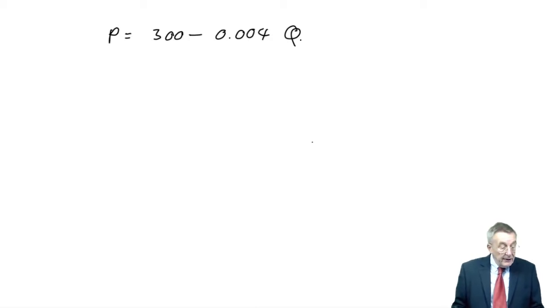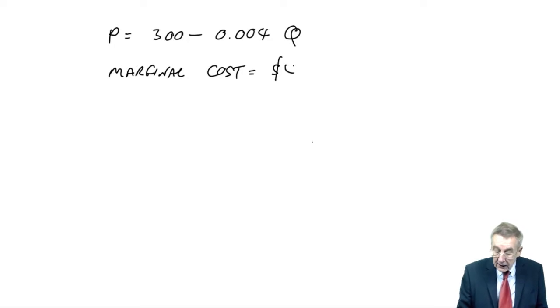We're also told that the variable or marginal cost is $40 a unit. Here, the cost per unit does stay fixed, however many units we produce. And our job is to find what would the selling price be to get maximum profit. I will tell you in a minute what to learn, but I'm not prepared to simply give a rule without some sort of explanation. This is why I went through the marginal revenue, marginal cost bit.